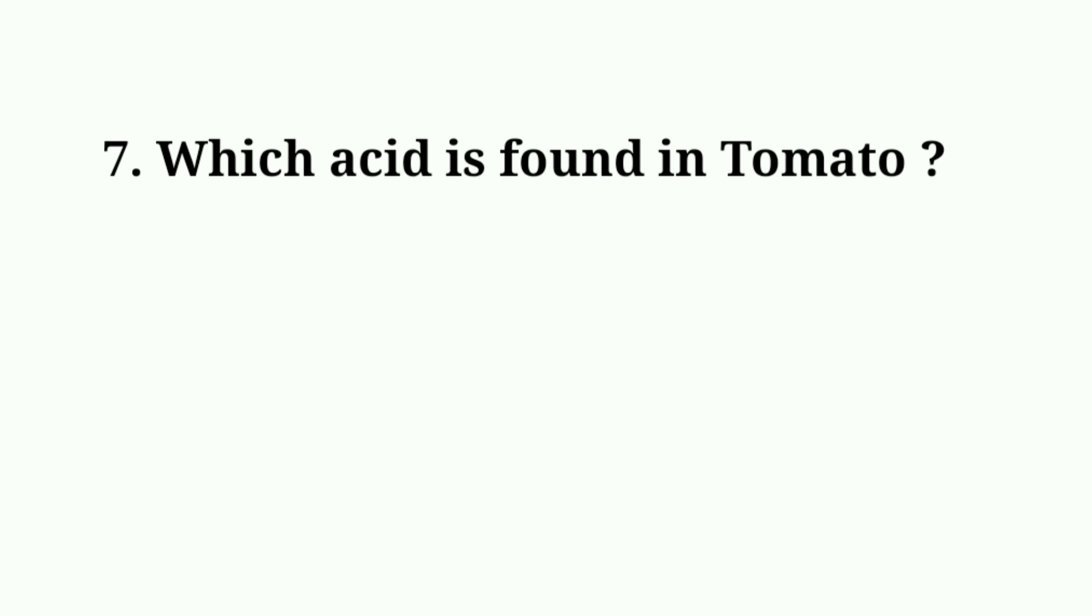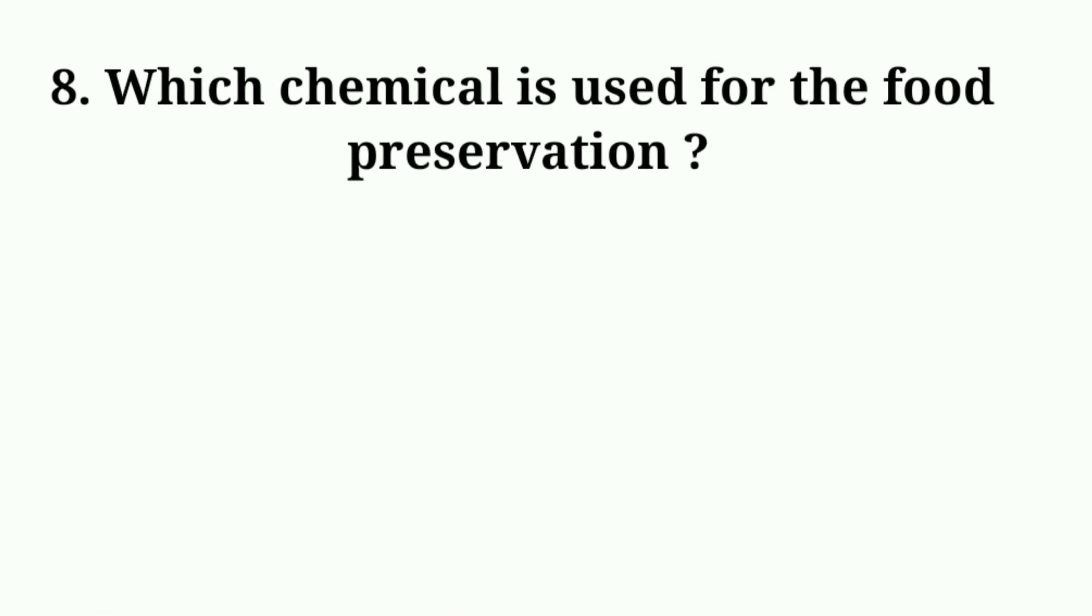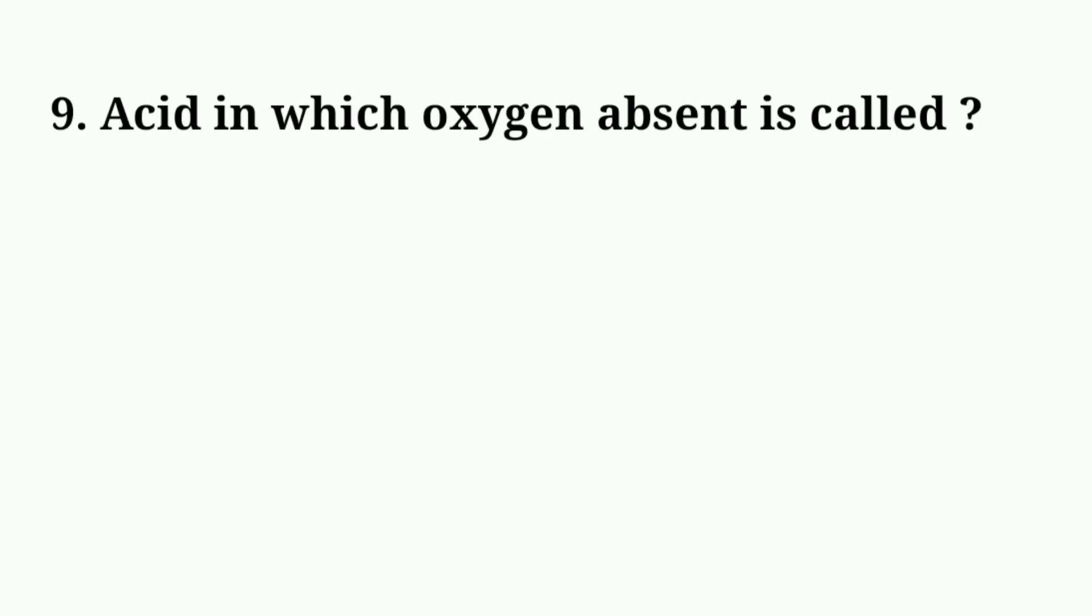Which acid is found in tomato? Which chemical is used for food preservation? Answer: Benzoic acid. Acid in which oxygen is absent is called hydrochloric acid.